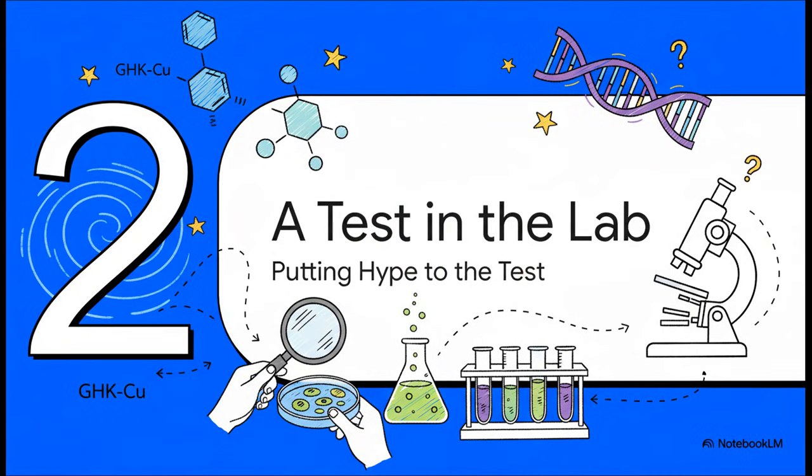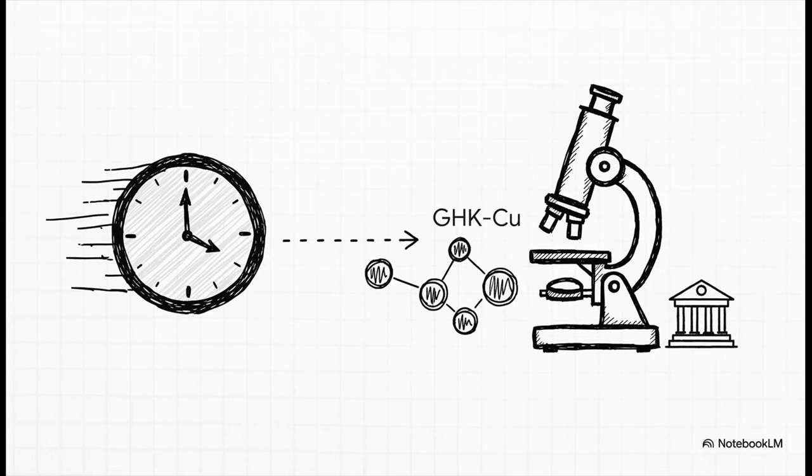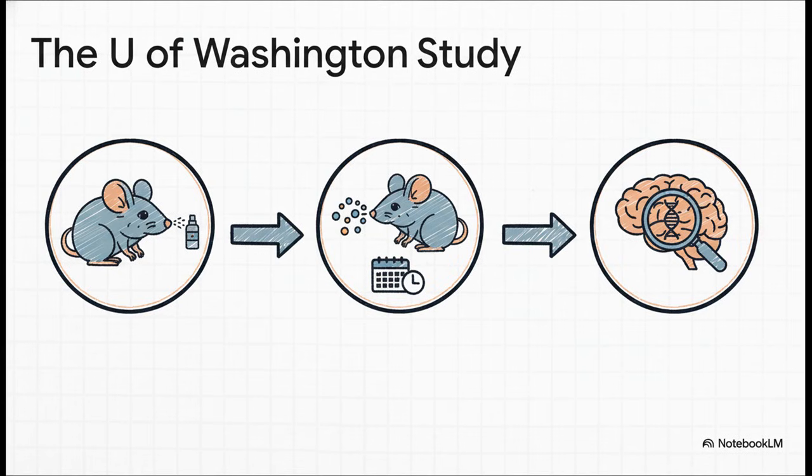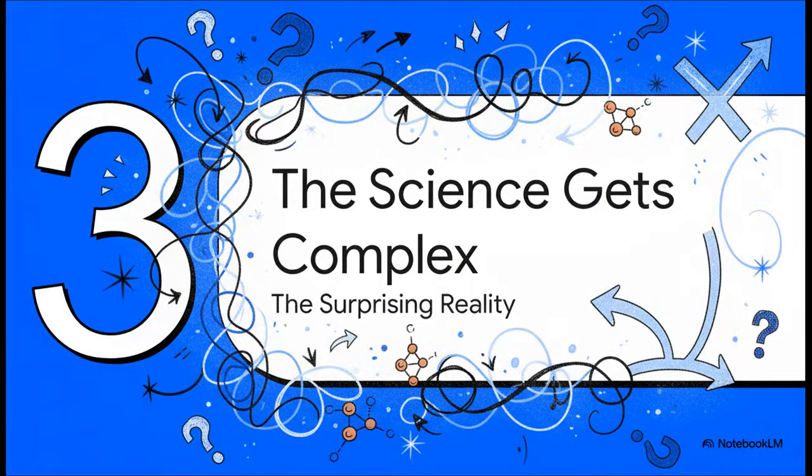Now with claims that big, you know scientists are going to put them under the microscope. So let's see what happens when GHK-Cu goes from popular theory into a serious lab setting. The biggest claim of all is that GHK-Cu can fight back against age-related decline. So a really recent study from the University of Washington decided to test exactly that. So here's the setup. The researchers took old mice, we're talking 20 months old, which is getting up there for a mouse. And for eight weeks, they gave them daily doses of GHK-Cu up the nose. Afterwards, they analyzed their brain tissue, looking not just at the cells, but at the deep genetic level, which genes were being switched on or off. They were hoping for some clear-cut answers, you know? But what they actually found was a much, much more complicated and frankly, surprising reality. The results were not what anyone was expecting.